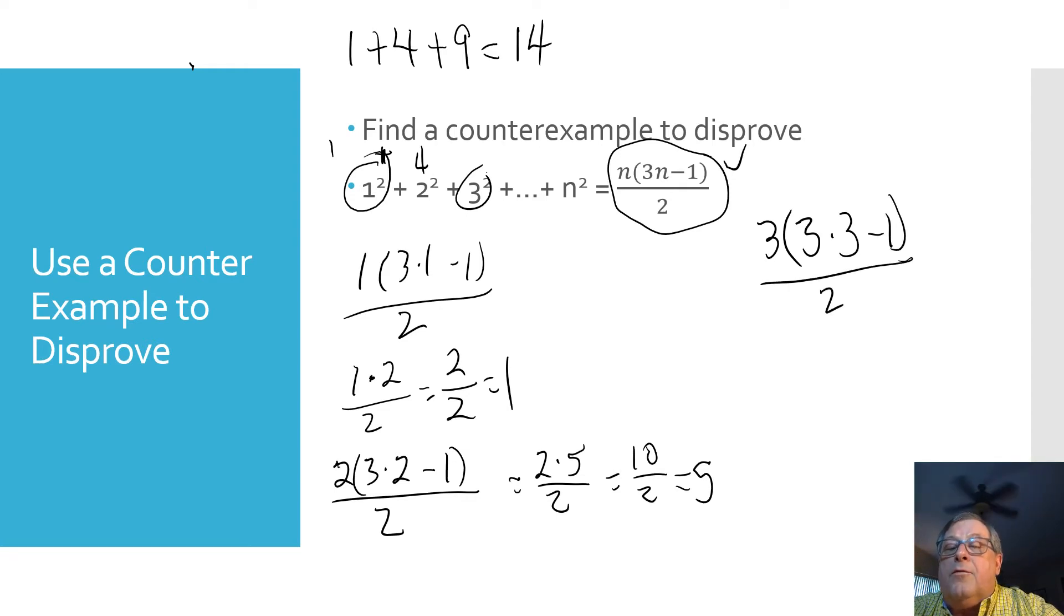So we've got three times three times three minus one over two. Three times three is nine, minus one is eight. So now we've got three times eight over two. Three times eight is 24 over two, and 24 divided by two is 12. Well, that does not equal 14.